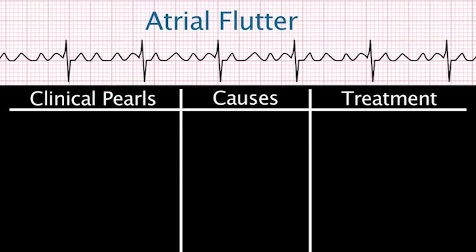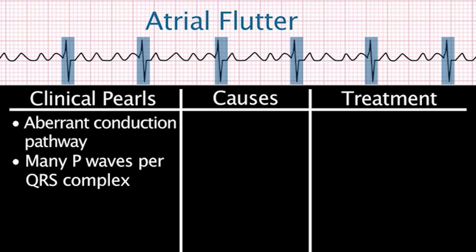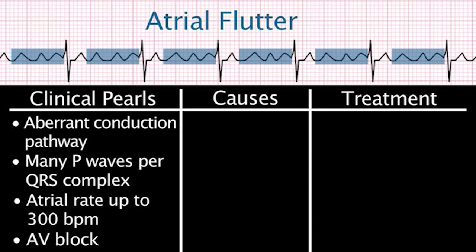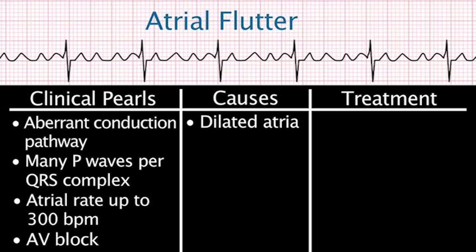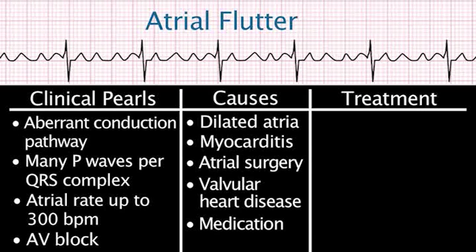Atrial flutter occurs when there is an extra conduction pathway in the right atrium, which electrical impulses can follow. This leads to many P waves for one QRS complex. The atrial rate can be up to 300 beats per minute. The AV node is unable to respond to a rate this fast, so there is a degree of atrioventricular block — there are more P waves than QRS complexes. Causes include dilated atria, myocarditis, any interatrial surgery such as atrial septal defect repairs, valvular heart disease, and medications such as digitalis.